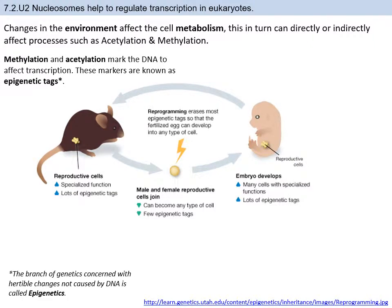Epigenetics is a growing field in biology as we learn more about how genes interact with each other. Acetylation and methylation are forms of epigenetic tags, and these are things that get passed down from generation to generation. Some of the reasons why we end up looking the way we do isn't just the sequence of our DNA, but also the expression of those genes — which ones are acetylated, which ones are methylated — basically those epigenetic tags.